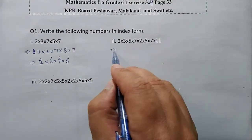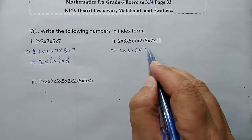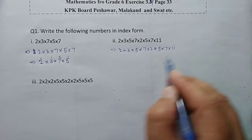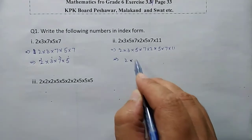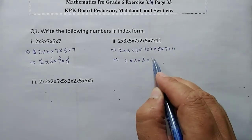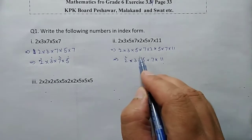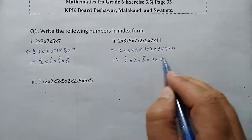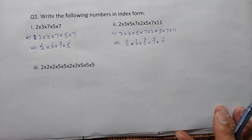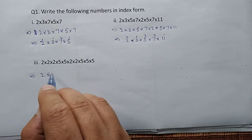Question two: 2 × 3 × 5 × 7 × 2 × 3 × 5 × 7. Two appears two times, three appears two times, five appears two times, seven appears two times, and eleven appears one time. Now write this in index form.